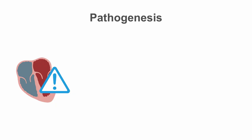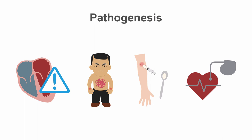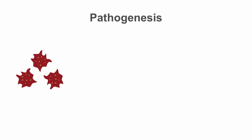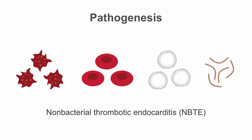The pathogenesis of infective endocarditis begins with damaged heart valves from congenital heart disease, rheumatic fever, IV drug abuse, and the placement of intracardiac devices such as implantable defibrillators and pacemakers. Valve damage leads to sterile deposits of platelets, red blood cells, white blood cells, and fibrin called non-bacterial thrombotic endocarditis, or NBTE.